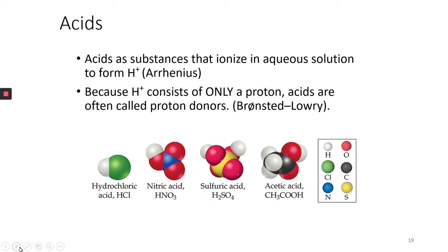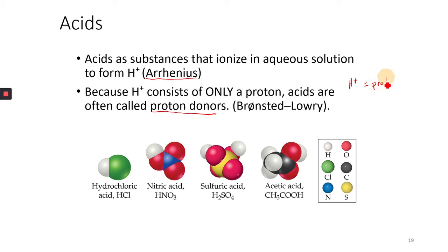First, acids. Acids are substances that are ionized in aqueous solutions — this was the definition proposed by Arrhenius. When you dissolve a substance in water, it produces or forms an H+. The second acid-base theory was Bronsted-Lowry, which is a little more generic: they said that acids are proton donors. Since H+ is a proton, you can see the similarities there.